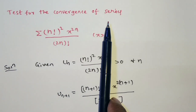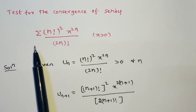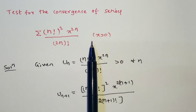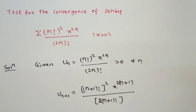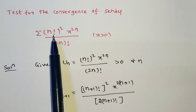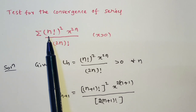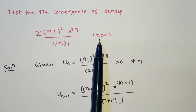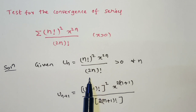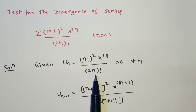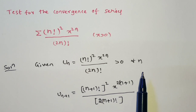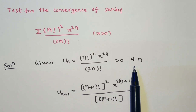Test for the convergence of the series summation n factorial whole square times x to the power of 2n, divided by 2n factorial, where x is greater than 0. In the given series there are factorial terms containing the nth term. We consider this as u_n. Since x > 0 and n factorial > 0, both numerator and denominator are greater than 0. Hence the given series is a series of positive terms for every value of n.